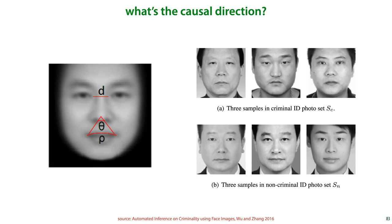This is important because it changes the interpretation of the results completely. The physiognomical interpretation is that there is a biological mechanism that causes both criminality and a particular shape of the mouth, and that this is determined at birth. The alternative explanation is that when people with a criminal background have their photographs taken, they are more likely to prefer a menacing expression than the average person. Note that the photos of criminals are not mugshots — they are described as normal ID photos by the authors.